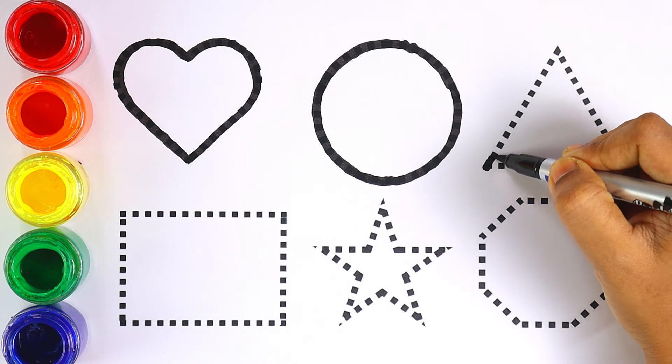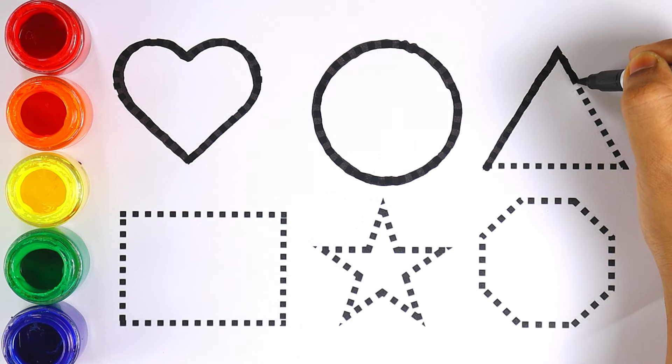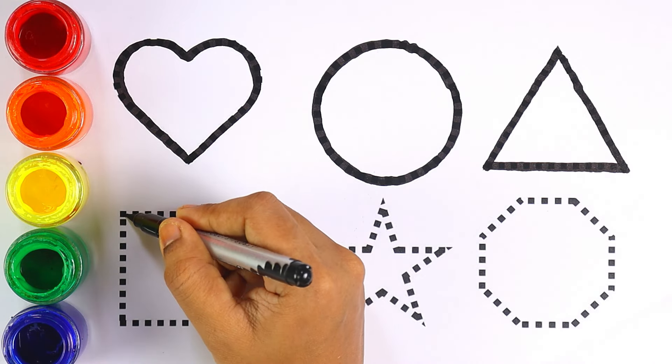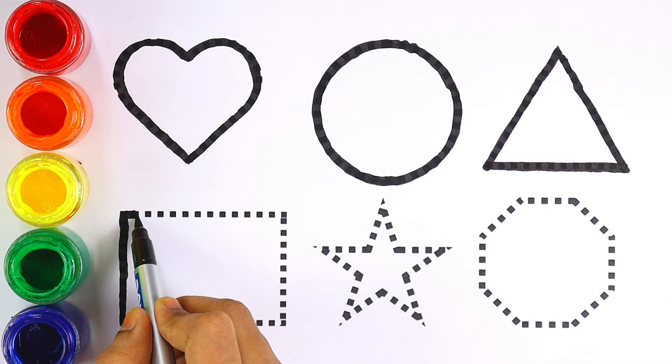Kids, can you guess the next shape? It is triangle. Triangle has got three sides: one, two, three. Let's move on to rectangle.